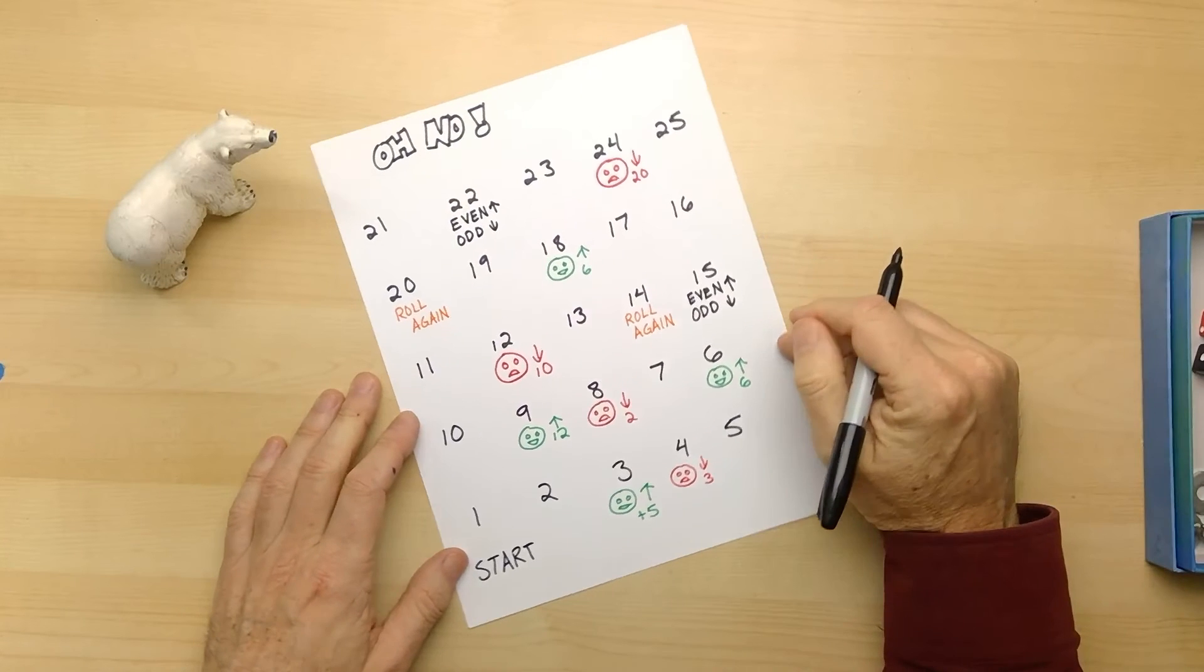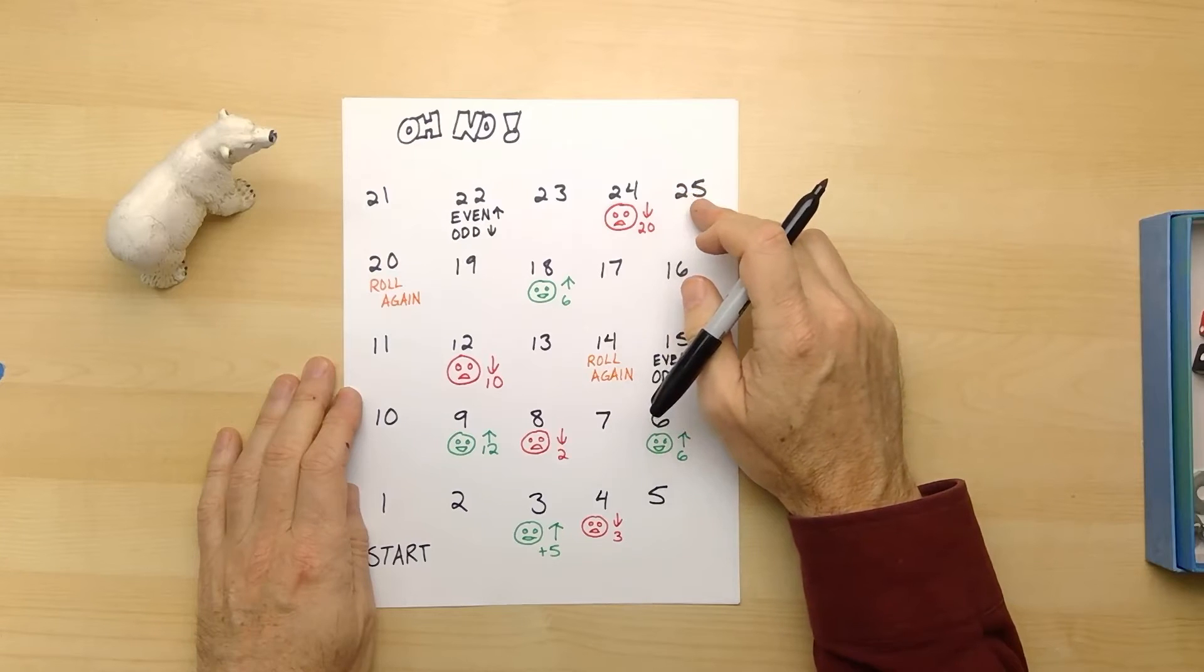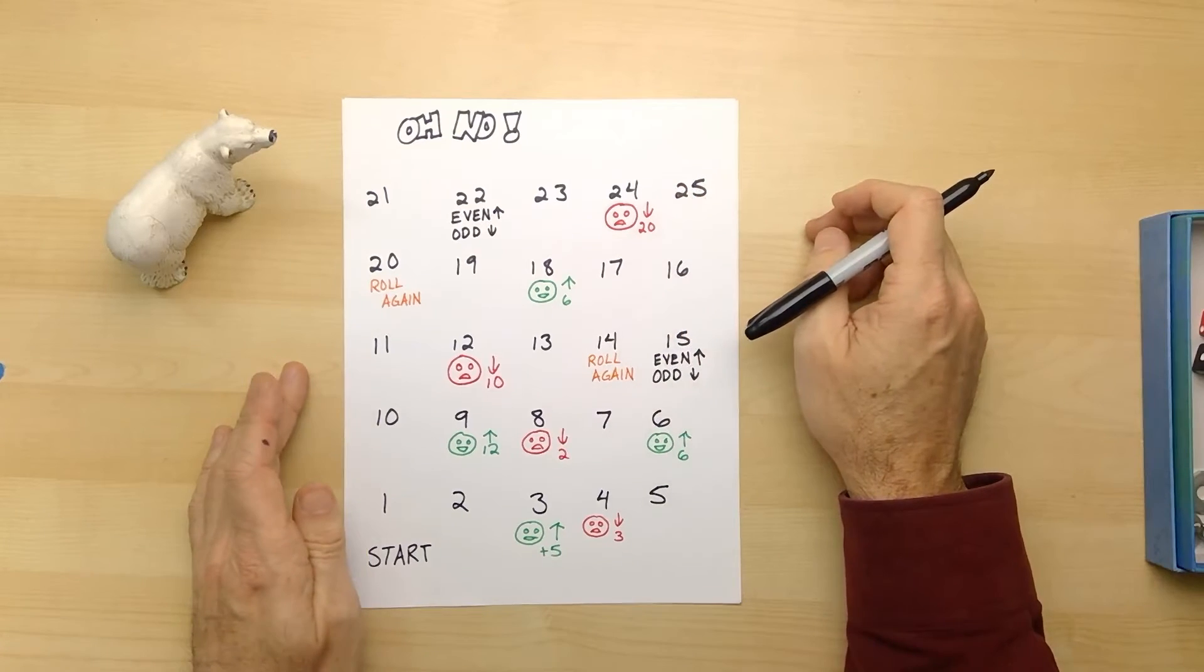Now for your game, you will have to decide - do you have to land on 25 exactly, or do you have to get 25 or more? That's up to you. You decide how to play.